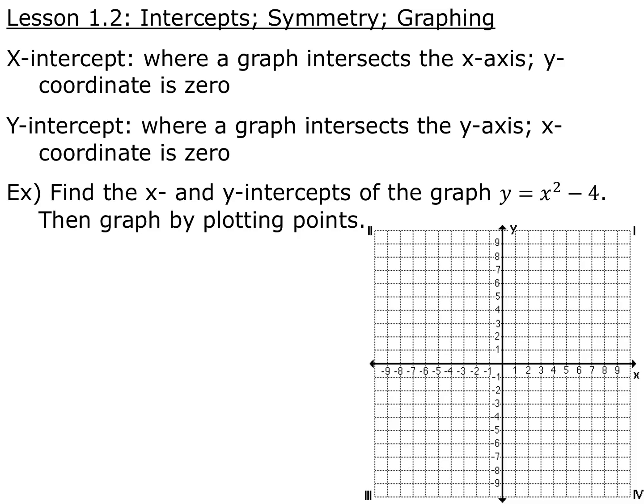Lesson 1.2 is intercepts, symmetry, and graphing. An x-intercept is where the graph intersects the x-axis, or where your y-coordinate is equal to 0. A y-intercept is where the graph crosses the y-axis, or where your x-coordinate is equal to 0. Those pieces of information — where your x and y-coordinates are equal to 0 — is how we're going to find x and y-intercepts.